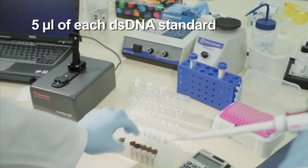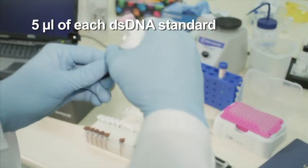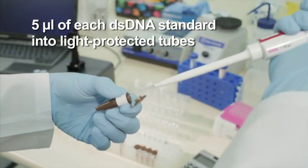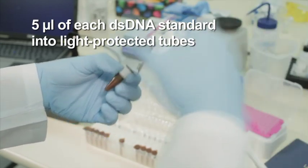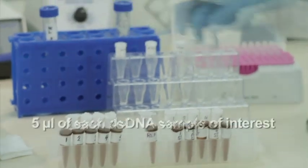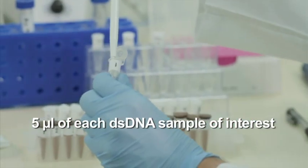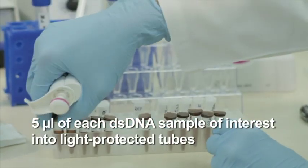Transfer 5 microliters of each of the diluted double-stranded DNA standards into an individually labeled nuclease-free amber or foil-covered tube. Then, aliquot 5 microliters of each double-stranded DNA sample of interest into the appropriately light-protected tube.